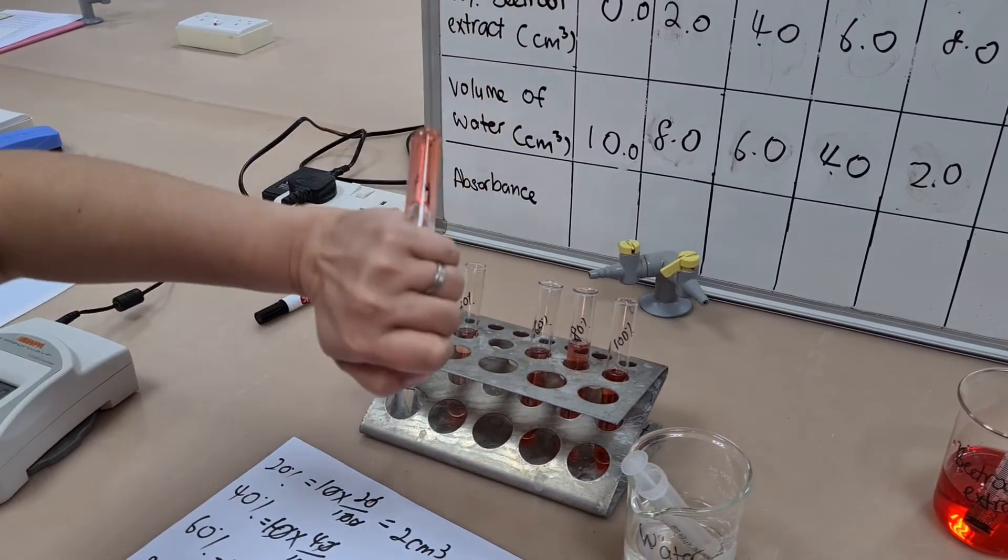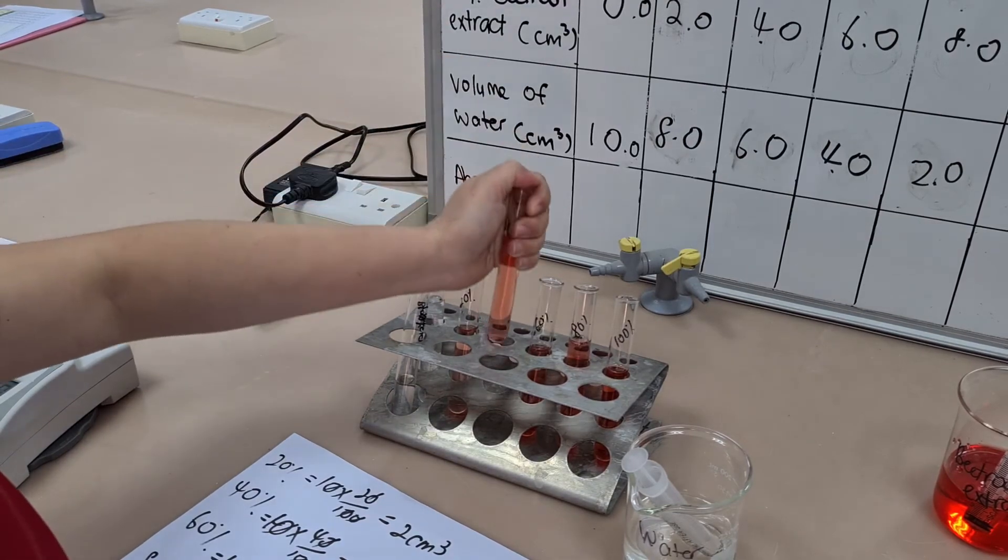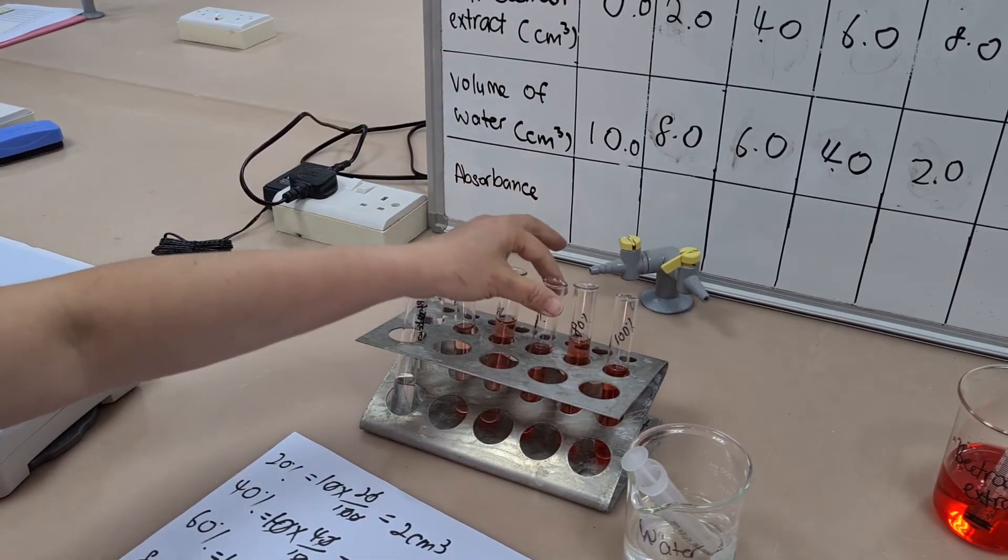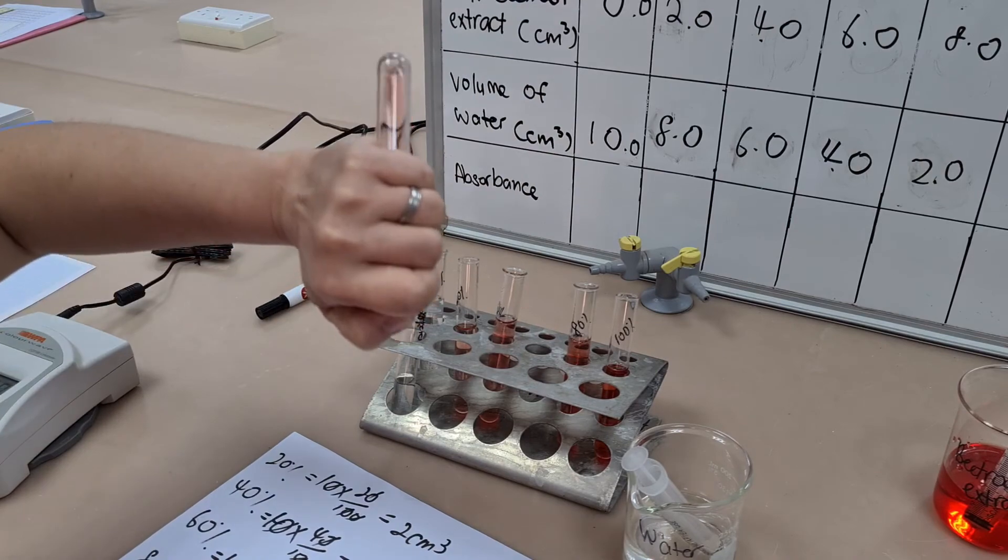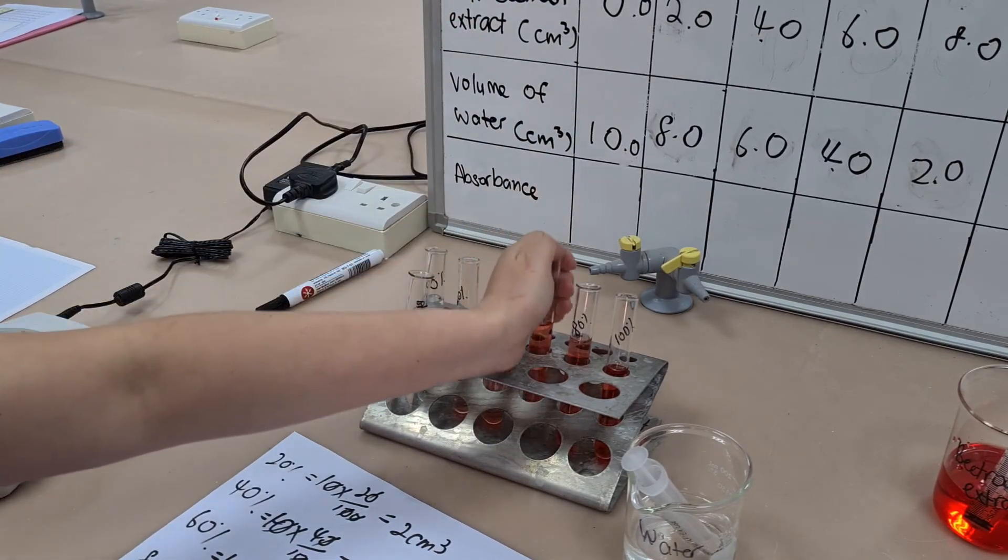So one of the things I notice that happens to students is that they do their measuring perfectly, but when they align their test tubes, liquids are at different heights. And the first thing they think is that they've actually measured it wrong, but in actual fact, they haven't.